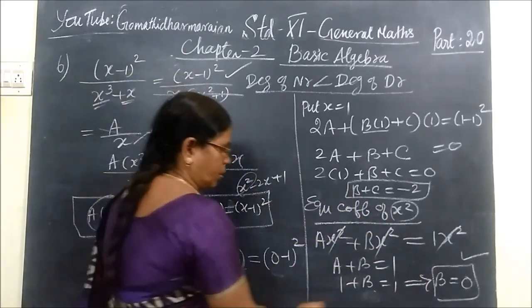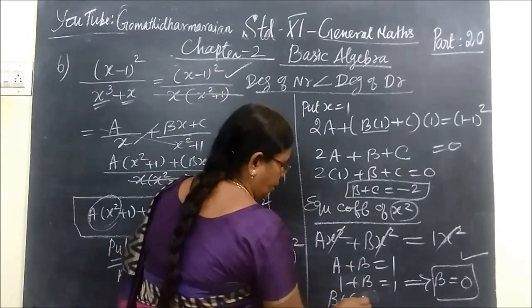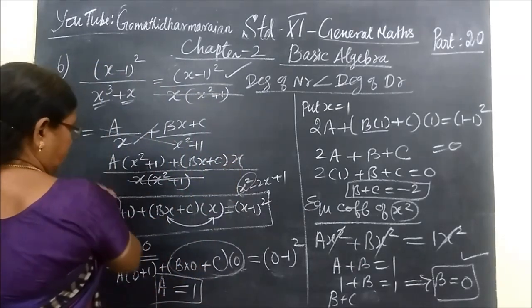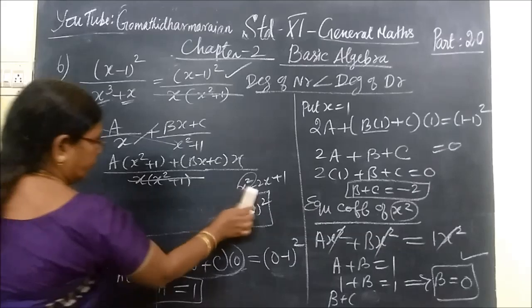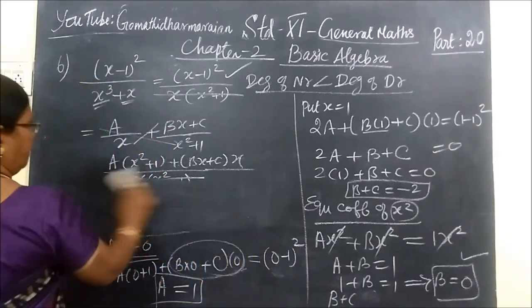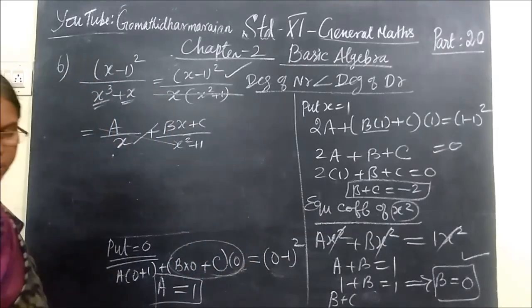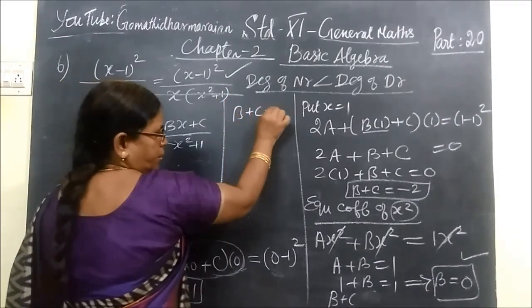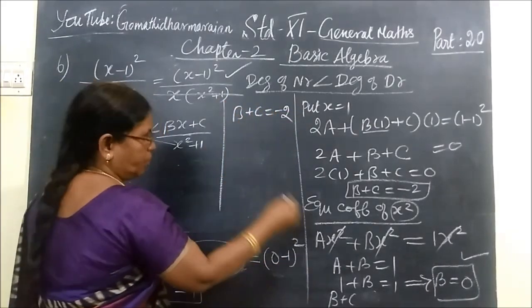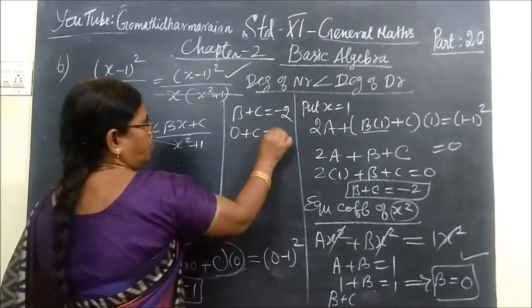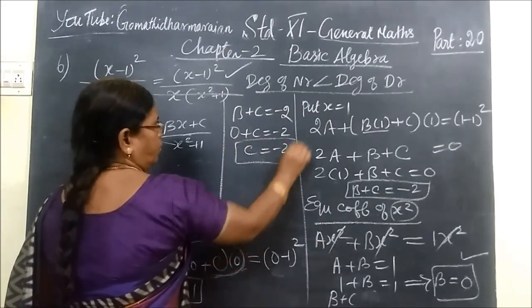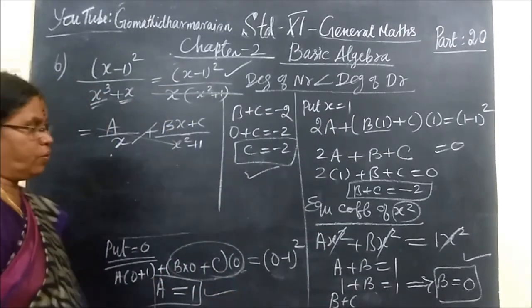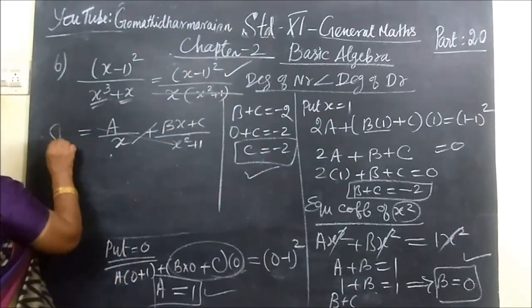B equal to 0, you substitute. You get B+C equal to -2. B value 0, so 0+C=-2. Here C equal to -2. So C value, B value, and A value. Now you substitute here.